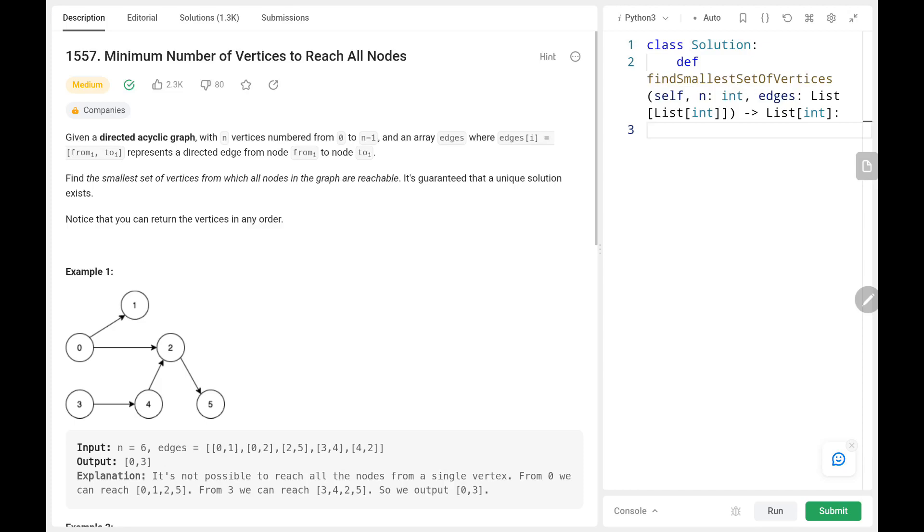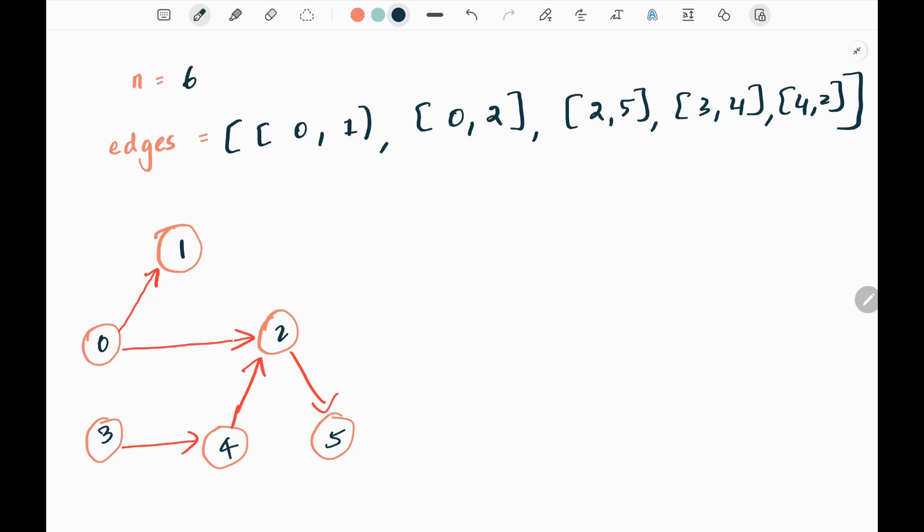Now let's dive into the solution. Here I've taken the first example from the LeetCode website. We have variable n where n represents the number of vertices in the graph, and the edges input represents the connection between two nodes. From zero to one we have a connection, zero to two we have a connection, and so on.